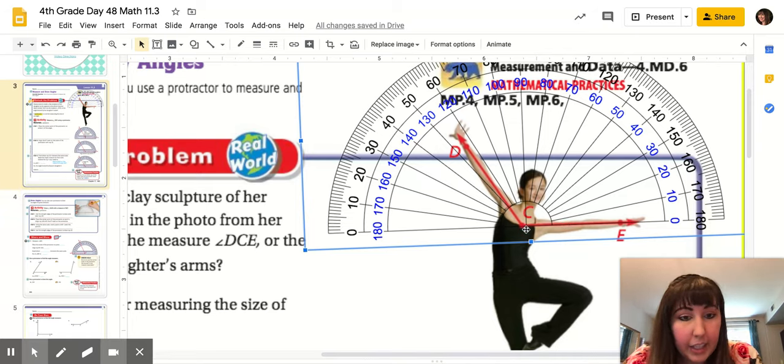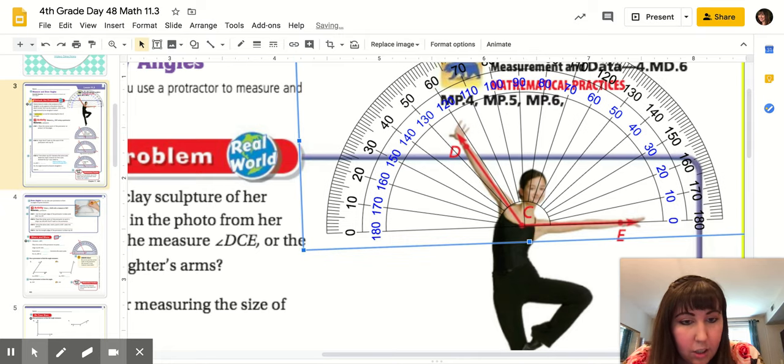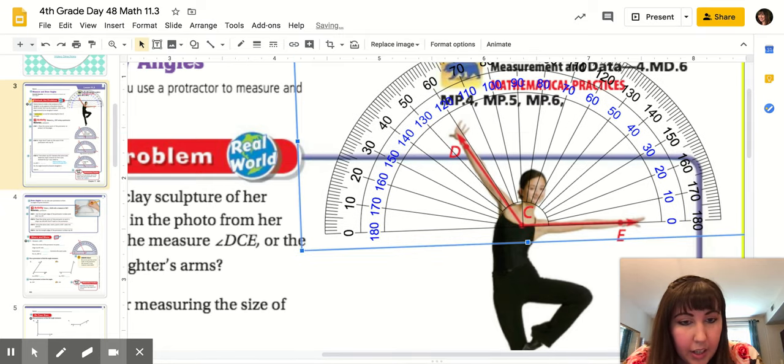But now I also notice that my cross isn't exactly lined up. So again, I'm going to drag it over just a little bit. There we go. And that looks about right.